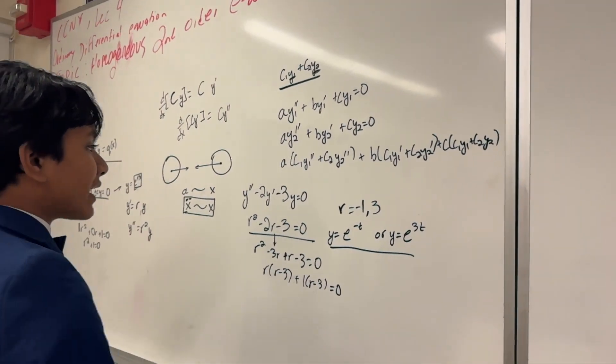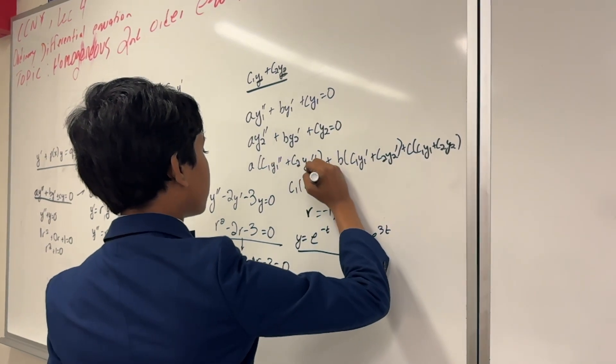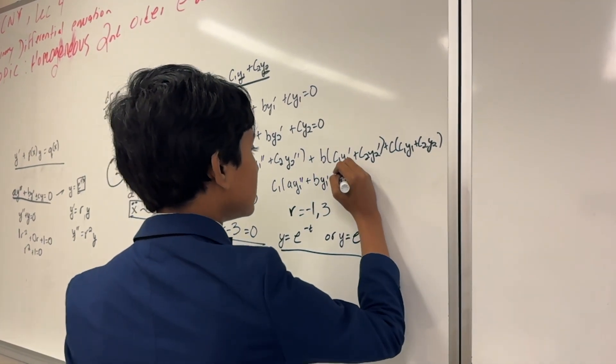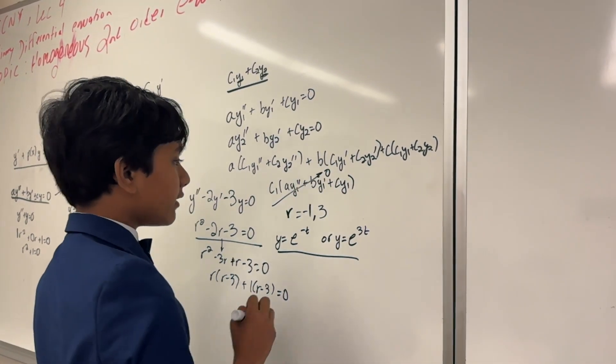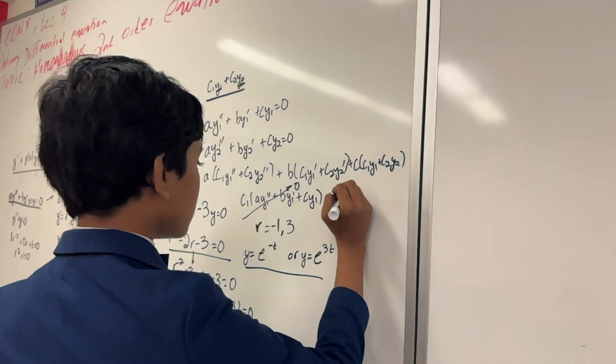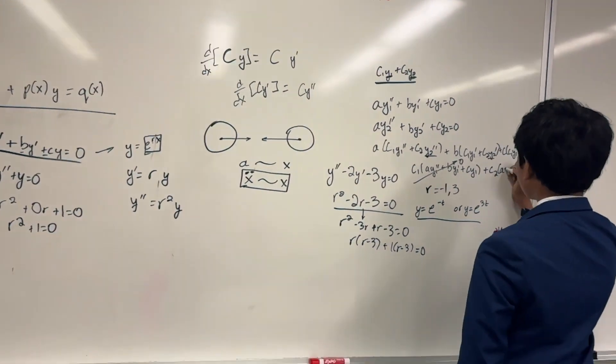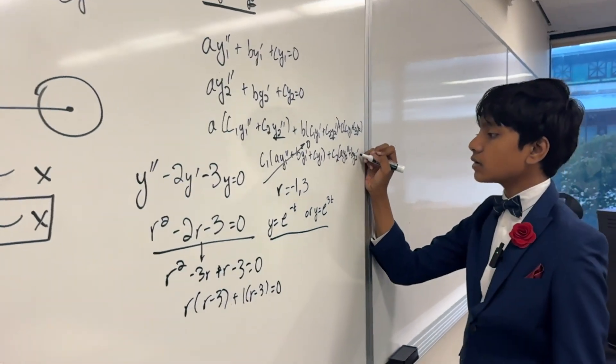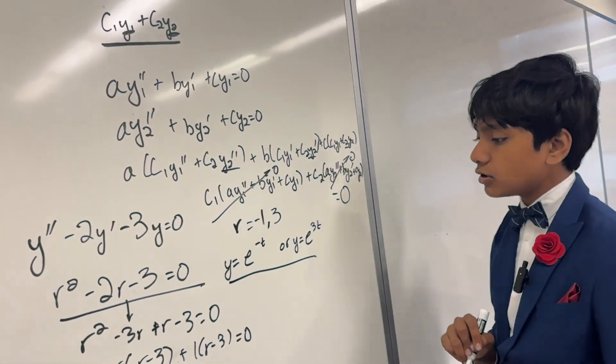You will recognize that if we factor out c1, we actually get a y1 prime prime plus b y1 prime plus c y1, which goes to 0. And then if we factor out c2, we have the same exact thing but for y2, and that also goes to 0.